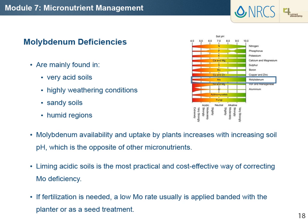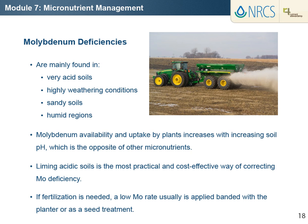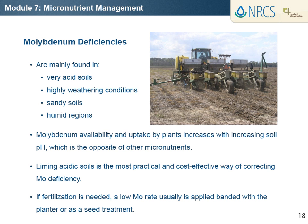The characteristic molybdenum deficiency symptom in some crops is irregular leaf blade formation known as whiptail, but interveinal mottling and marginal chlorosis of older leaves have also been observed. Molybdenum deficiencies are found mainly on very acid, highly weathered sandy soils in humid regions. Molybdenum availability and uptake by plants increases with increasing soil pH, which is the opposite of other micronutrients. Liming acidic soils is the most practical and cost-effective way of correcting molybdenum deficiency and acidity problems at the same time. However, if fertilization is needed, a low molybdenum rate usually is applied as a seed treatment or planter banded along with other fertilizers.